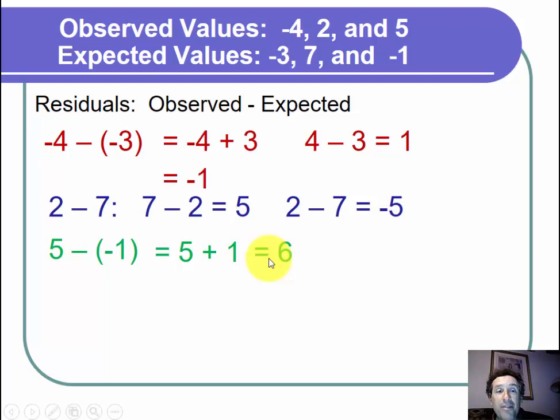Now we have the three residuals: negative 1, negative 5, and 6. Next task is to find the sum of the residuals. To do that, we just take negative 1 plus negative 5 plus 6.